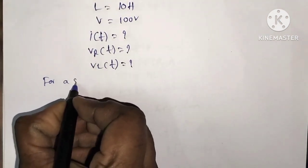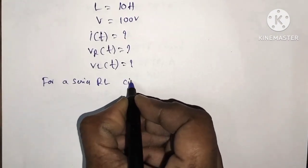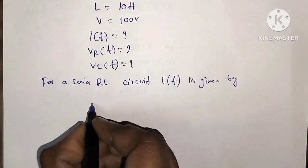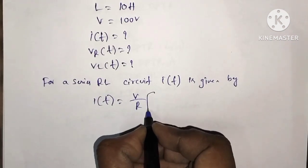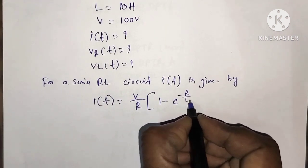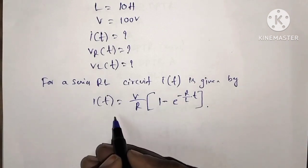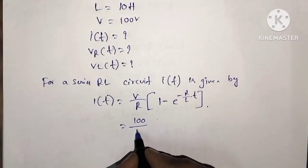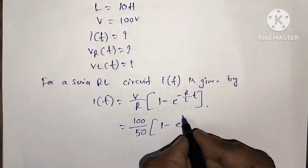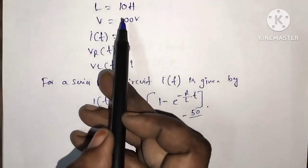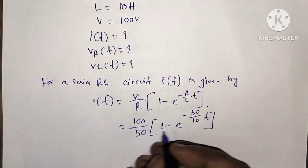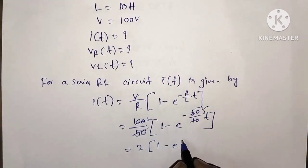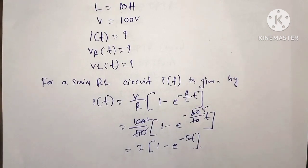For a series RL circuit, I of t is given by: I of t equal to V by R into 1 minus e power minus R by L into T. Substituting values: V equal to 100 volts, R equal to 50 ohms, L equal to 10 henrys. So I of t equal to 100 by 50 into 1 minus e power minus 50 by 10 into T, which simplifies to 2 of 1 minus e power minus 5T.